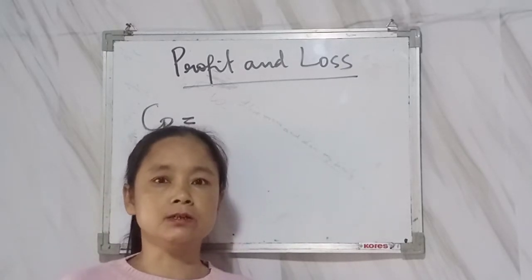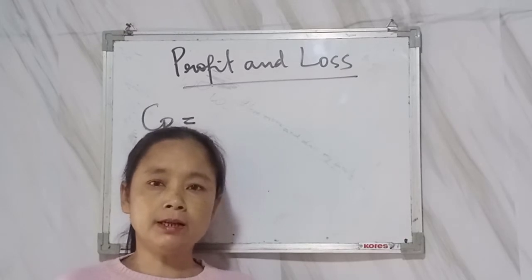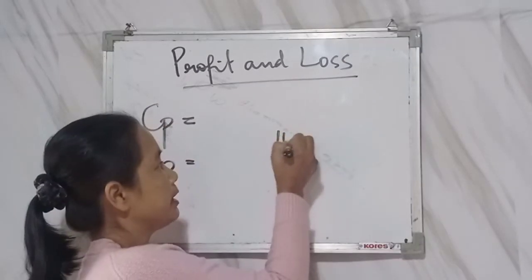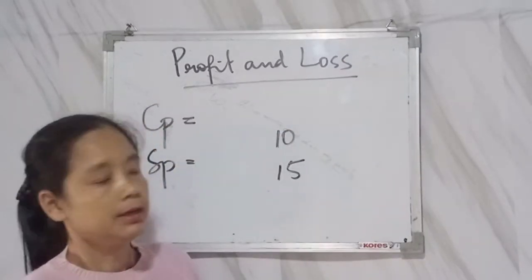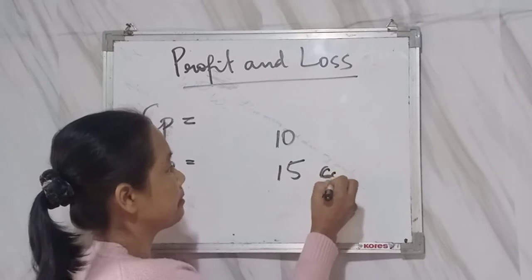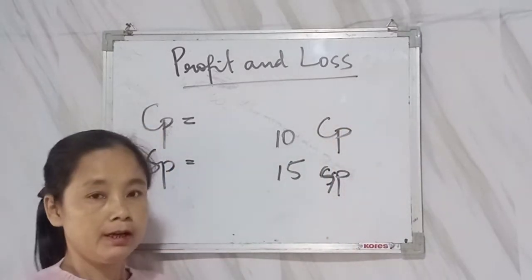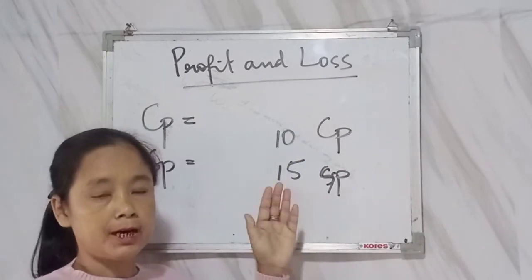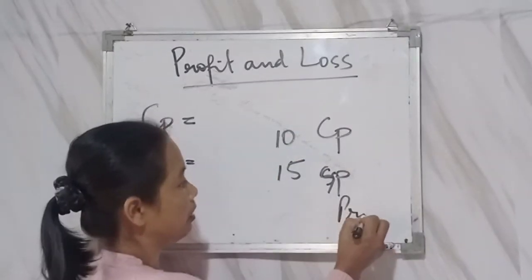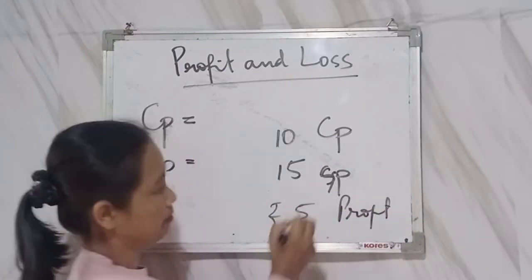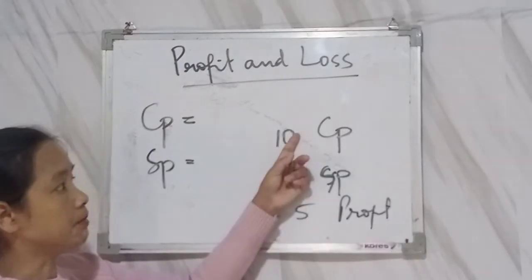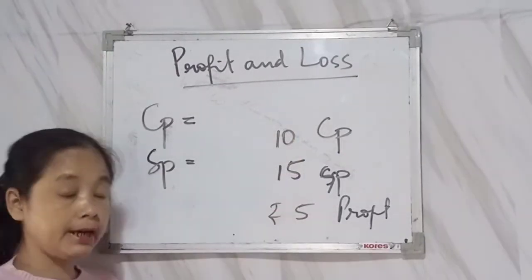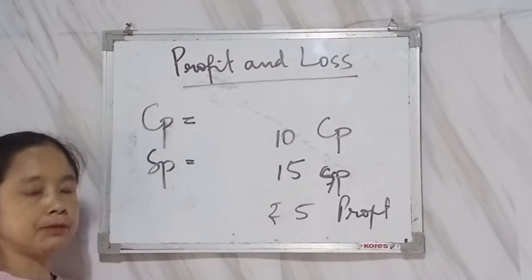This is your selling price and this is your cost price. For example, if you bought something for 10 rupees and sell it again for 15 rupees, that means you make a profit of 5 rupees. From the given formulas, you can then find out what the profit percent is.